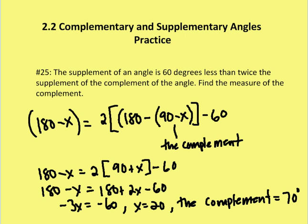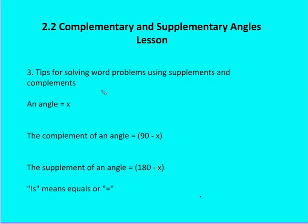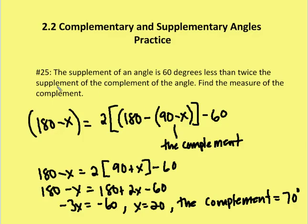Let's work through a tough problem. 'The supplement of an angle is 60 degrees less than twice the supplement of the complement of the angle. Find the measure of the complement.' Breaking this down: the supplement of an angle is 180 minus x. So the supplement of the angle equals 60 degrees less than twice the supplement of the complement of the angle.